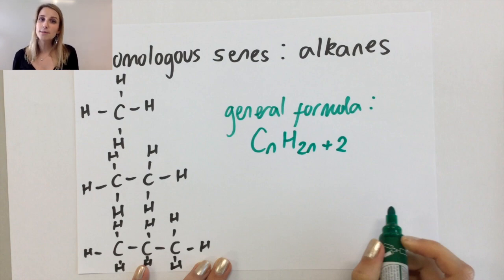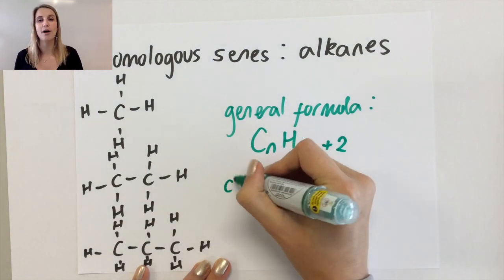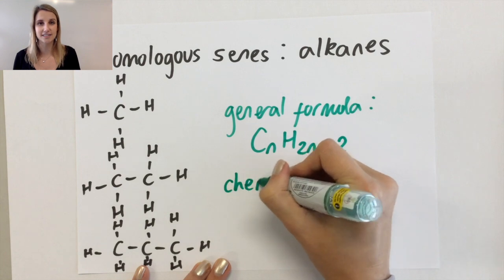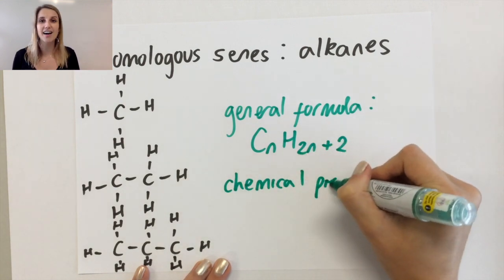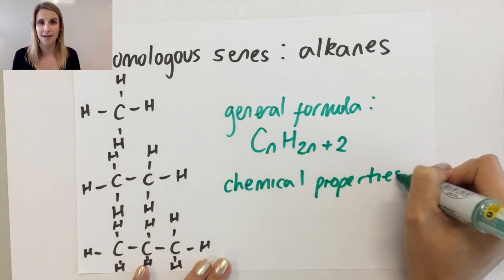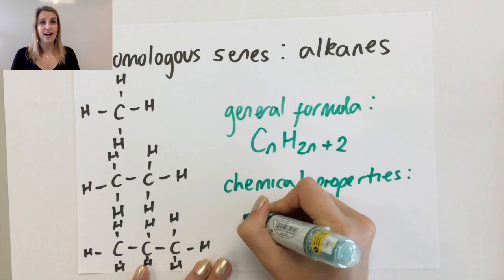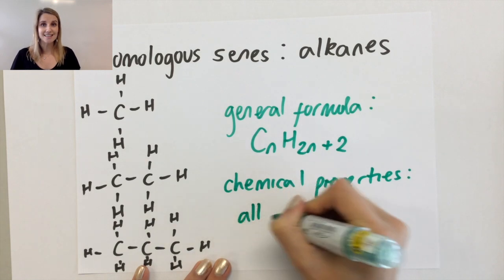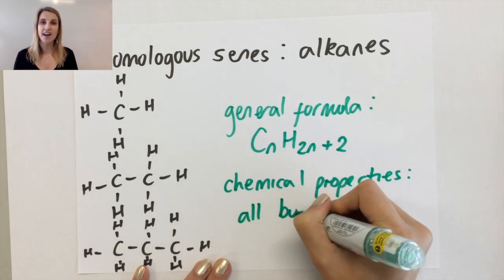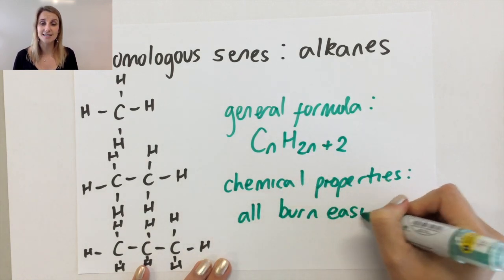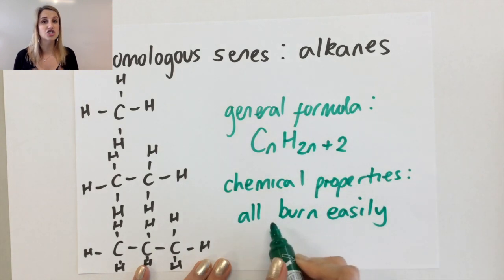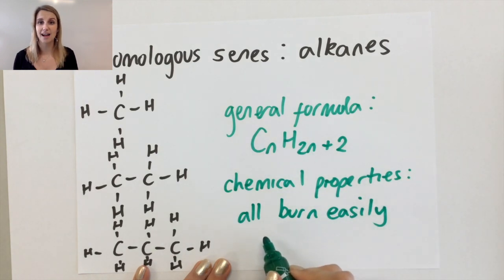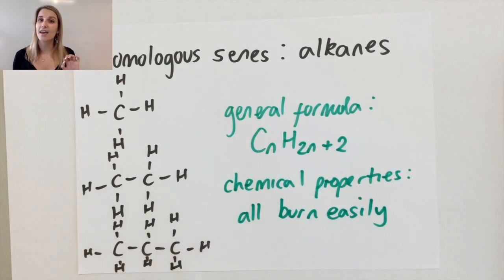In terms of chemical properties, we're talking about reactivity, and all of these react in the same way. For alkanes, that means they burn really easily. So alkanes are generally unreactive, but they all burn easily.